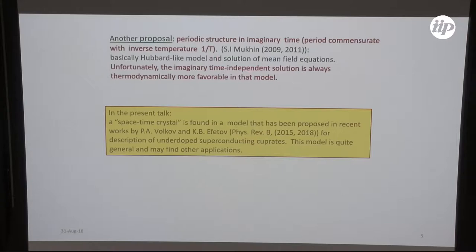There was another proposal by Sergei Mukhin in Moscow, who proposed that there could be an imaginary time periodical structure with period 1 over T if it is bosonic. But unfortunately, the major imaginary time independent solution was always thermodynamically more favorable.